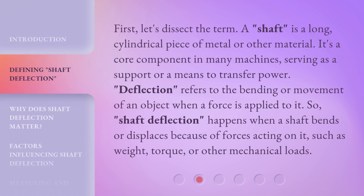First, let's dissect the term. A shaft is a long cylindrical piece of metal or other material — it's a core component in many machines, serving as a support or a means to transfer power. Deflection refers to the bending or movement of an object when a force is applied to it. So shaft deflection happens when a shaft bends or displaces because of forces acting on it, such as weight, torque, or other mechanical loads.